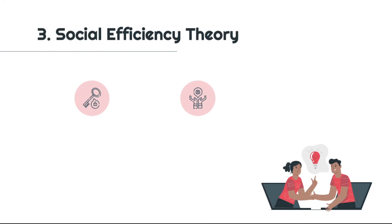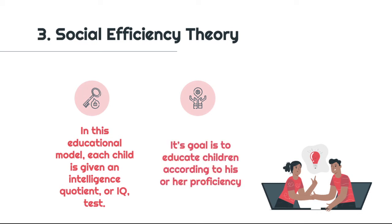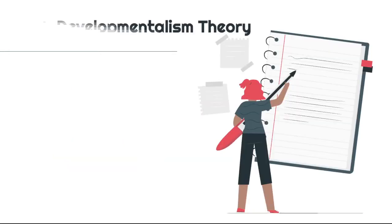3. Social Efficiency Theory. In this educational model, each child is given an intelligence quotient or IQ test. Its goal is to educate children according to his or her proficiency. The scores from the test determine the course of education for that child.